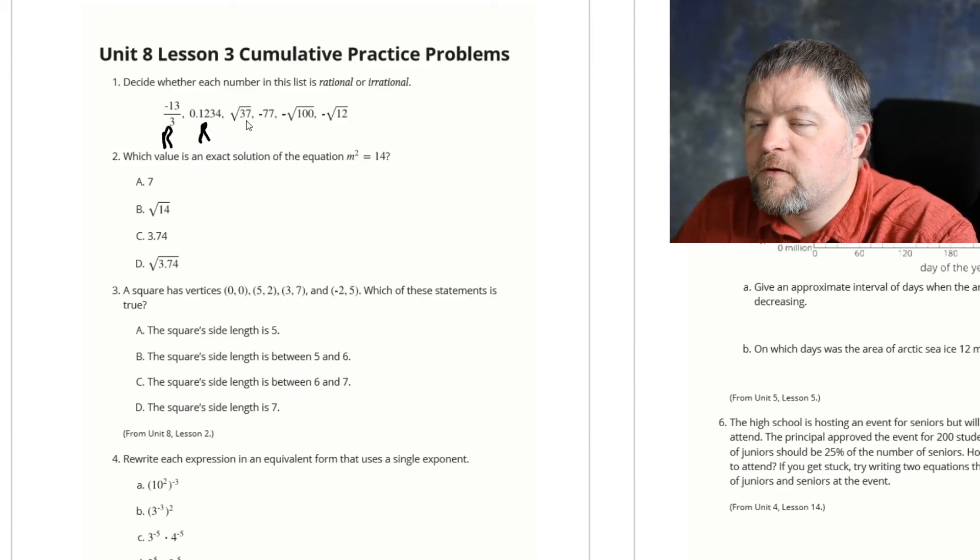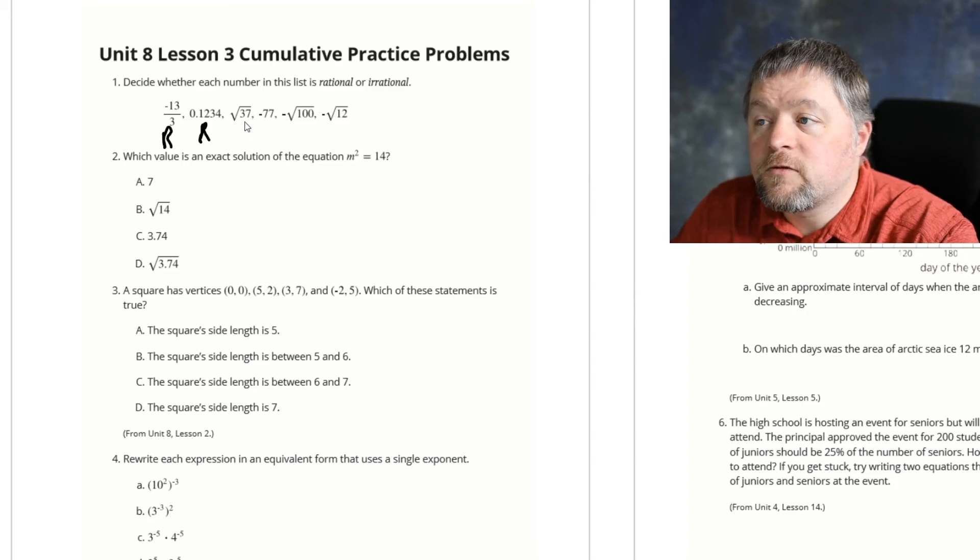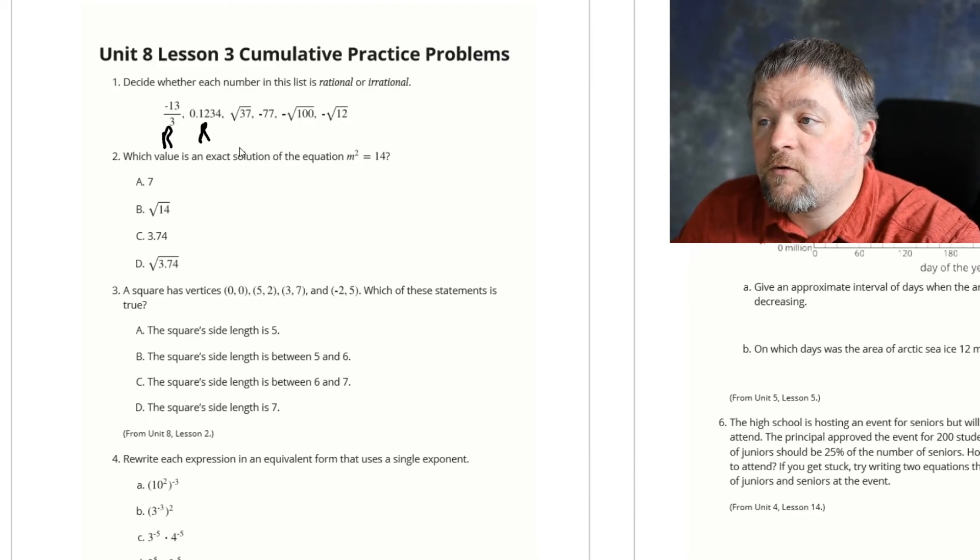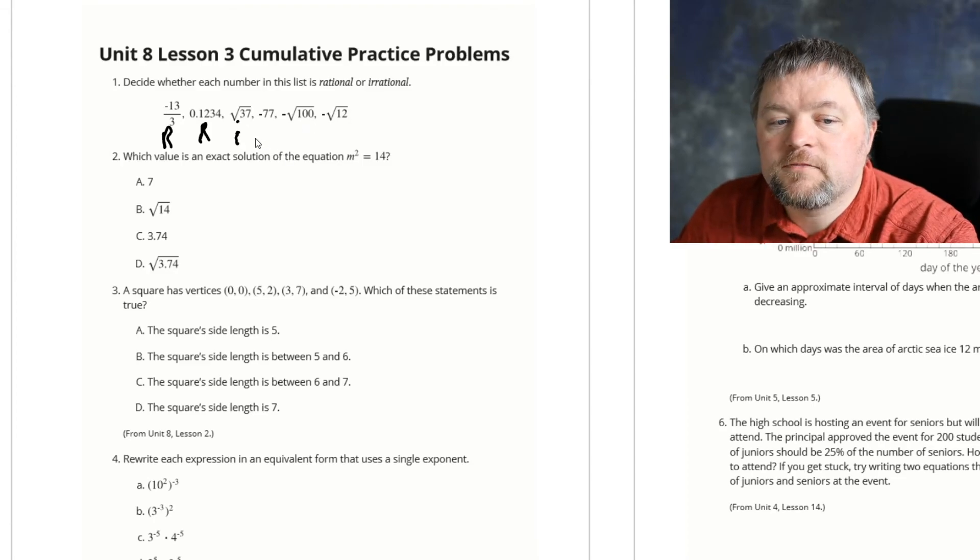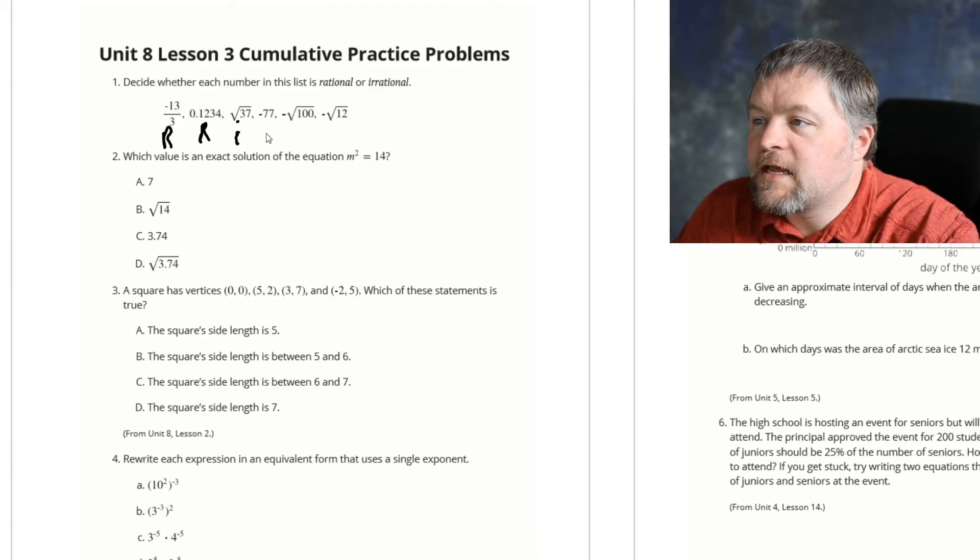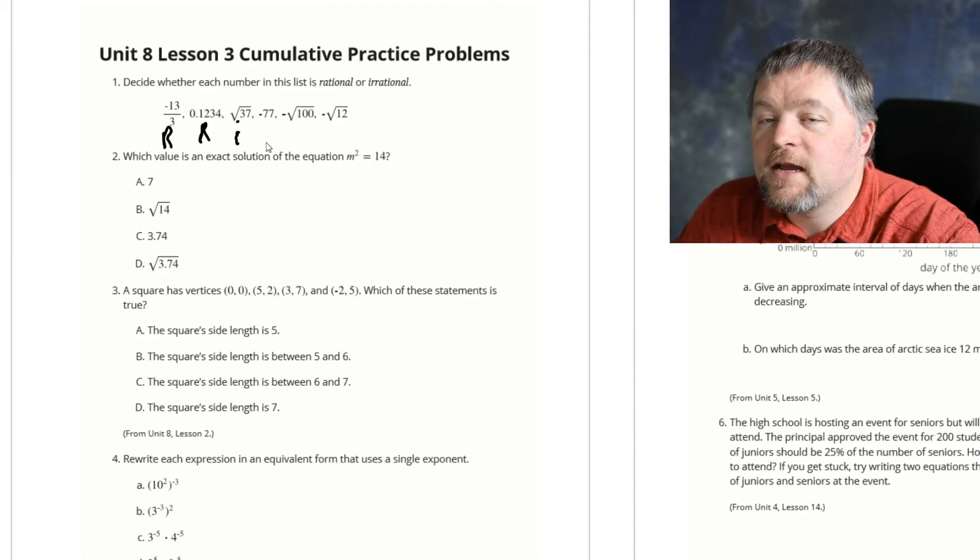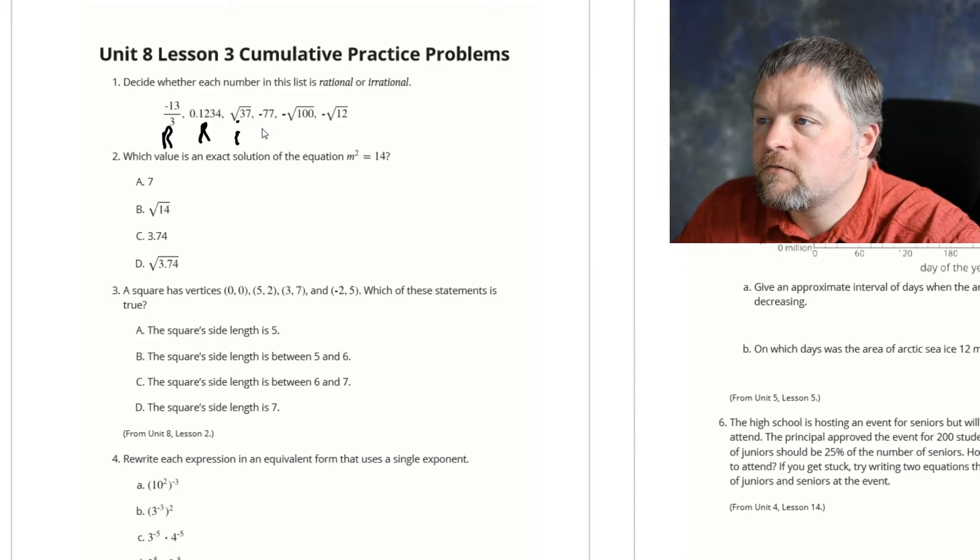So that is rational. The square root of 37. Well, the square root of 36 is 6, so the square root of 37 is not going to work out nicely. So that is irrational. Negative 77 could be negative 77 over 1. That's rational.